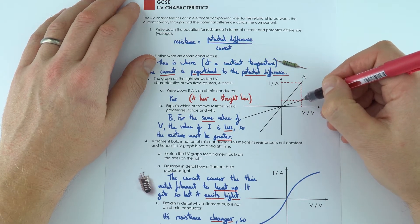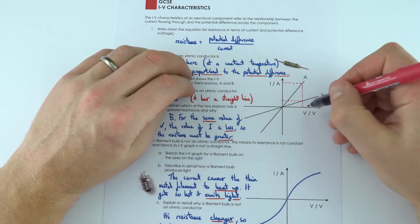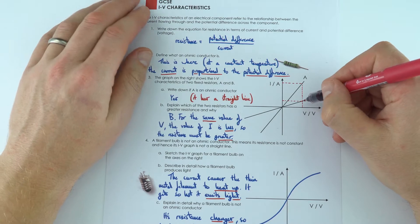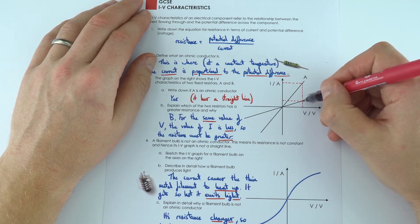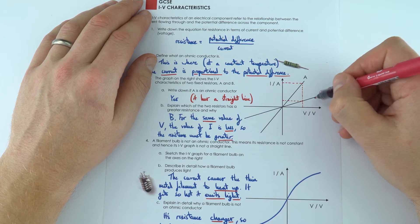Now what that means is that even though these might be connected, imagine in a very similar circuit, B is going to let less current flow round. And the reason that less current is flowing is because B must have a higher value of resistance.